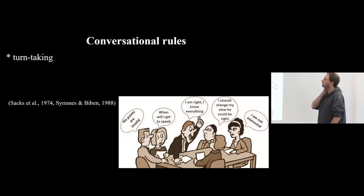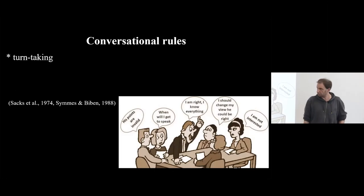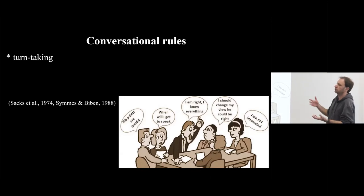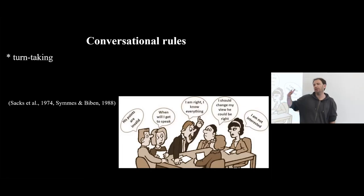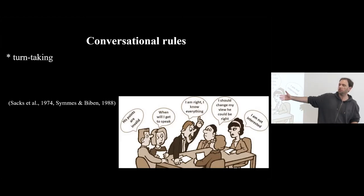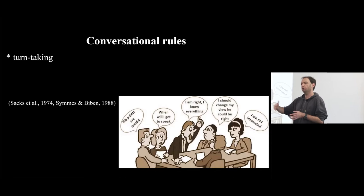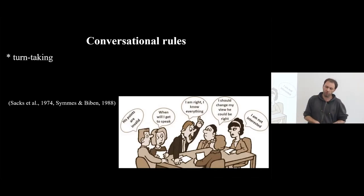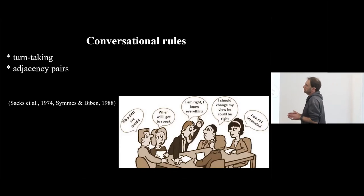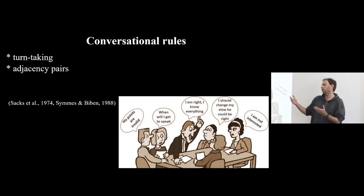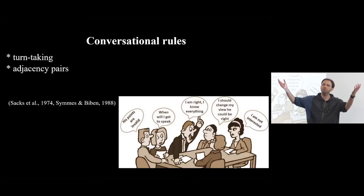A few criteria were suggested to more formally define what a conversation-type interaction is. First is reciprocal turns, or turn-taking. Participants avoid overlap — we try to anticipate when the next person is about to finish their turn and prepare to fit into that gap, avoiding awkward pauses but also avoiding talking simultaneously. The interaction is also between defined parties, in contrast to a general announcement or speech directed at as many people as possible.